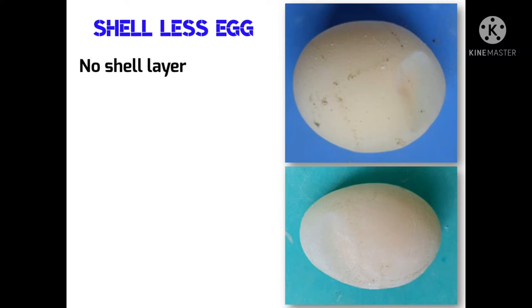This is a shell-less egg. This egg is laid without a shell layer and these eggs are protected only by the shell membranes. A shell-less egg consists of yolk, albumen, and membrane only. It doesn't have a shell at all. The egg contents are protected by outer membrane only and these are often seen in pullets coming into lay.